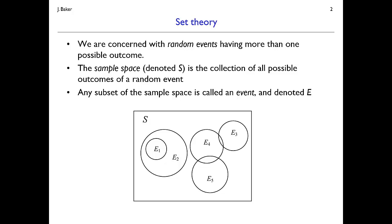A random event is an event that has more than one possible outcome, and ahead of time we don't know what that outcome is going to be. The sample space denotes the collection of all possible outcomes of the event — no matter what happens, it's inside this sample space. Some subset of that sample space is what we call an event.